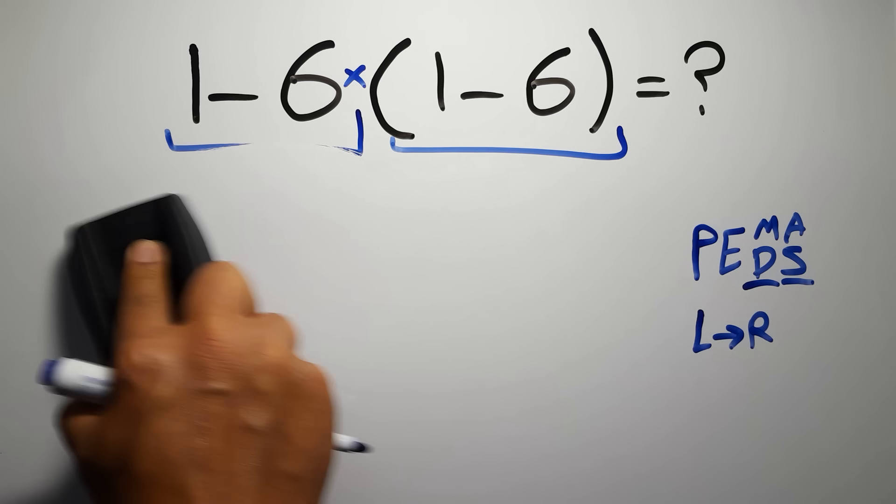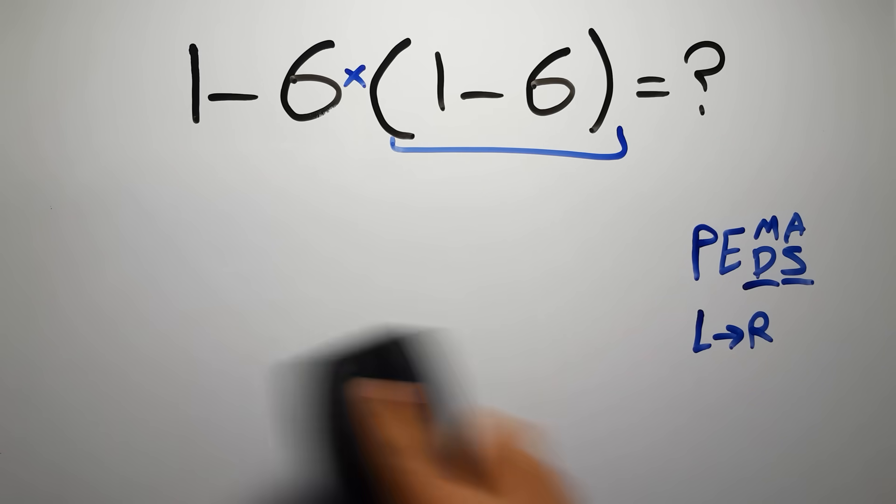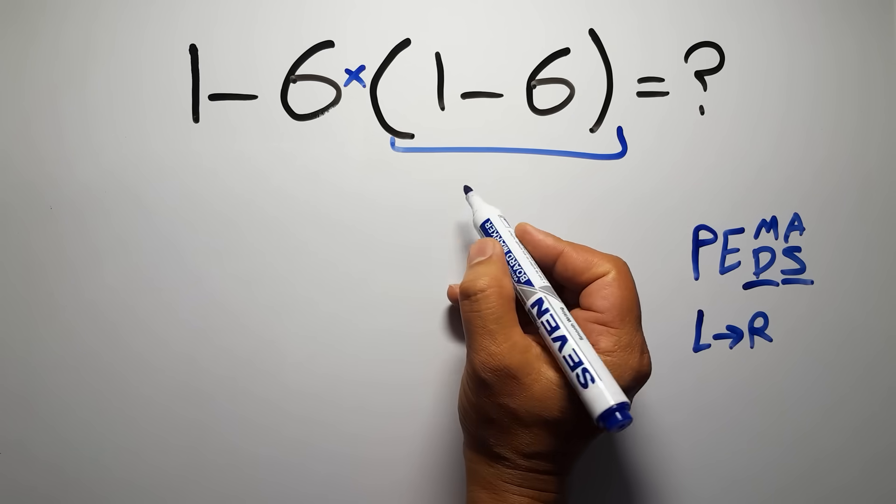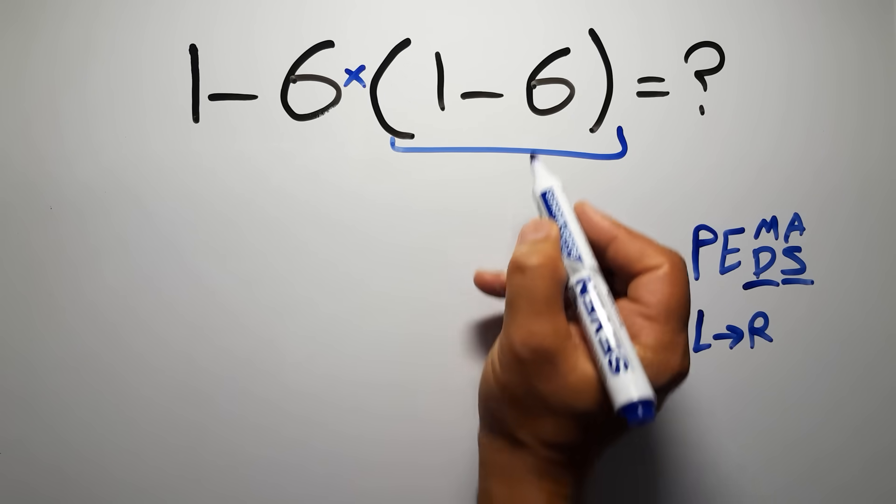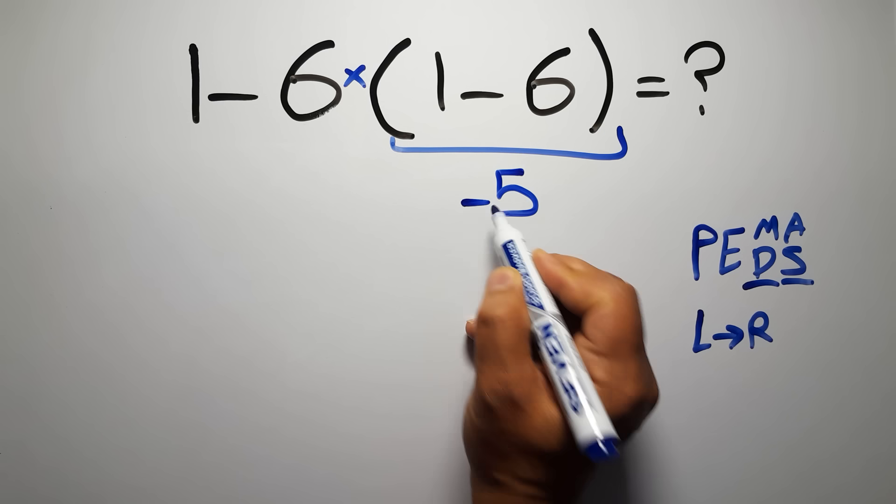So first this parentheses. Inside this parentheses we have 1 minus 6, which gives us negative 5.